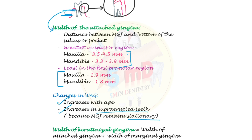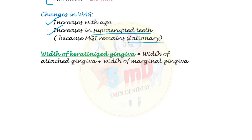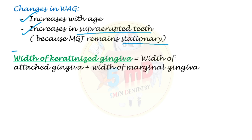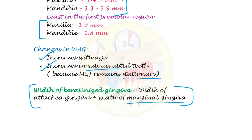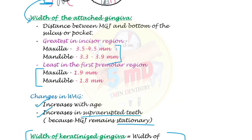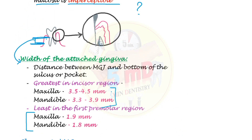There is another related term: width of keratinized gingiva, which is the width of attached gingiva added to the width of marginal gingiva, as both components are keratinized. These concepts form the basis of attached gingiva. Thank you.